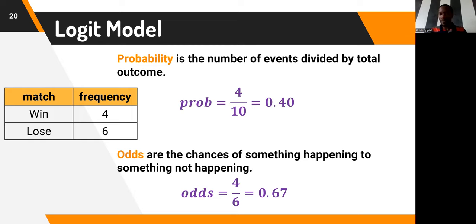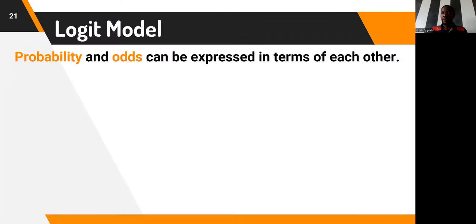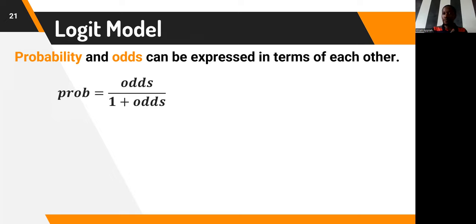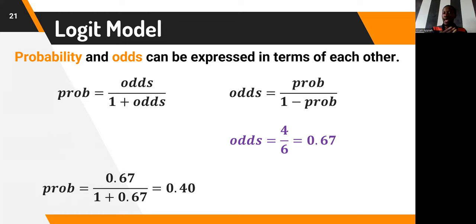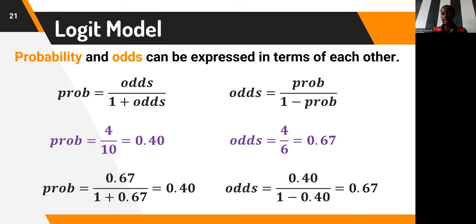When we calculated odds of 0.67 and substitute into the probability identity, we get 0.40. And substituting probability 0.40 into the odds identity gives exactly 0.67. Hence, probability and odds can be expressed in terms of each other. Logistic regression calculates the log odds given the values of the predictors. For our house ownership model, logistic regression models the log odds that the family will own a house given the family's income.